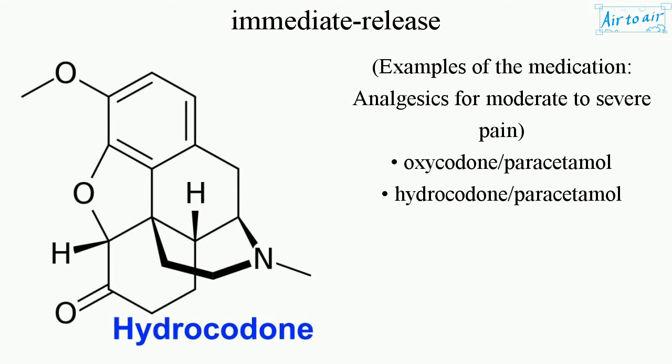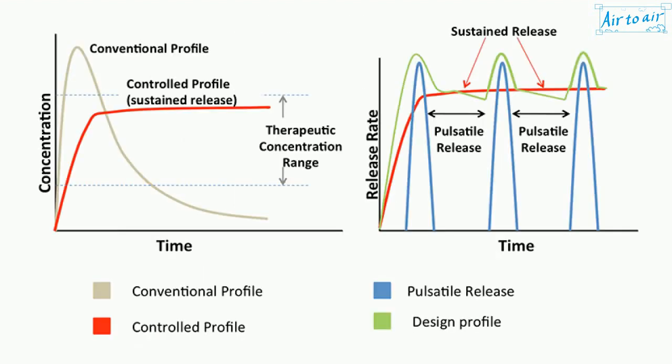Examples of immediate release medications — analgesics for moderate to severe pain: oxycodone/paracetamol and hydrocodone/paracetamol.